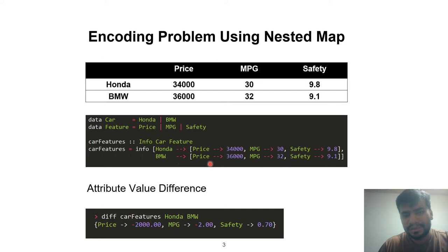Once we have encoded the problem, now we can try to find which is the better brand of car. The first thing we could do is perform a component-wise difference for Honda and BMW, which gives us this set of numbers. But we are not able to interpret this value difference because we do not know how to compare a price advantage of two thousand dollars for Honda against a miles per gallon disadvantage of two, and how do these attributes compare to safety.